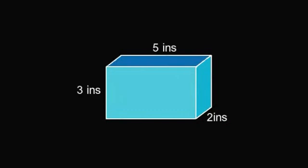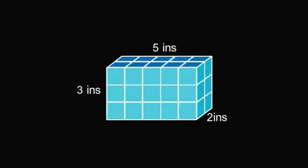For this example, let's say our cuboid is five inches long, three inches wide, and two inches deep. We can split it into smaller cubes — each one unit in length, one unit in width, and one unit in depth, so in this case one inch in each dimension. Each one is a cubic inch. In green there, we have one cubic inch.